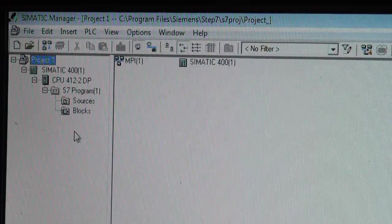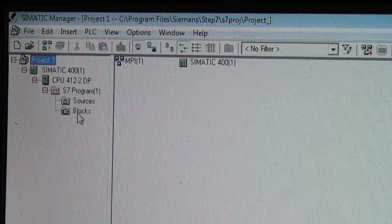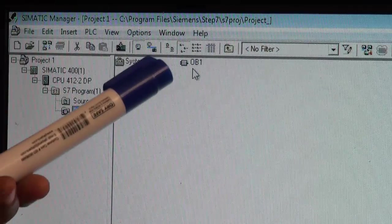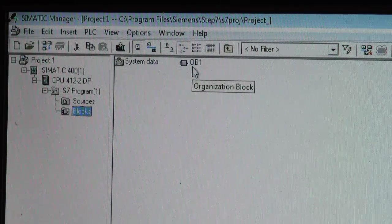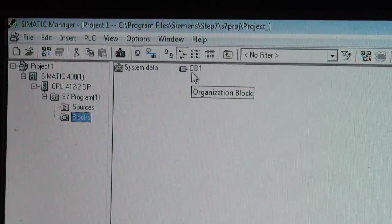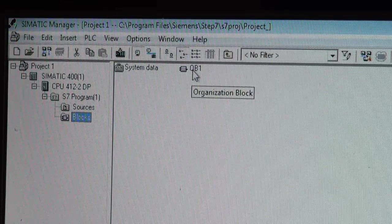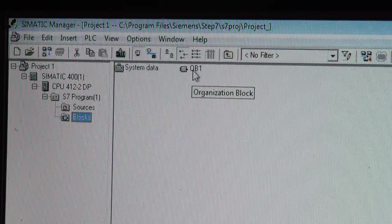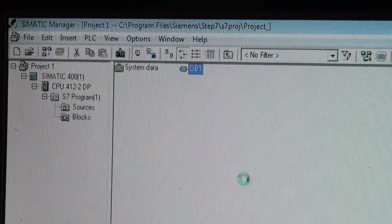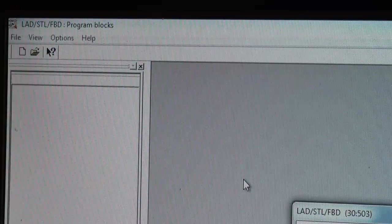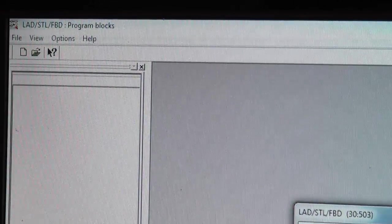Inside CPU you can find S7 programs in which there are two options called sources and blocks. Inside blocks we will find the option OB1 that is organization block 1 which contains the complete program of the PLC that is there inside the CPU of PLC. So we will double click OB1, open it and then we will make modification in this program.